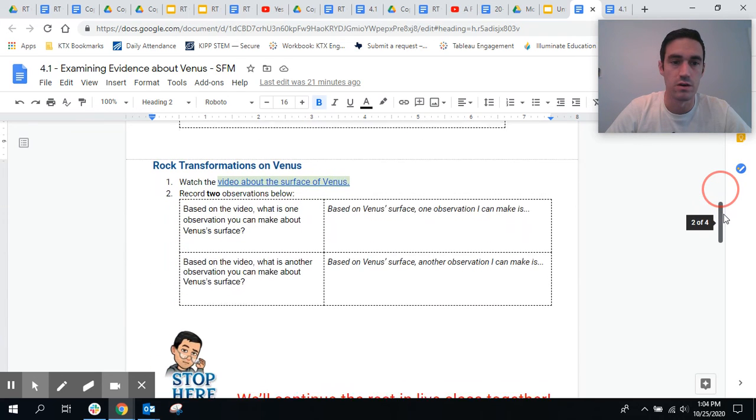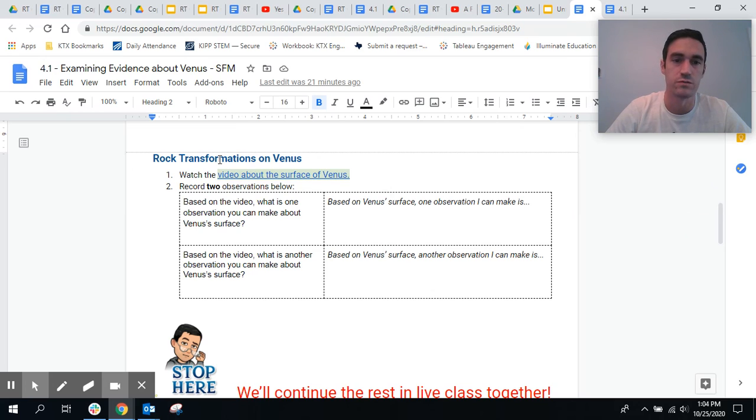And then you are going to continue on to this section here that says rock transformations on Venus. Click on this link and it will take you to a YouTube video. It's about two minutes where it will give you some facts about Venus and kind of do a simulated fly-by or flyover of the surface of Venus. And as you do that, I want you to look for two observations about the surface of Venus that you can make. And when you're done with your video, you can come back and put one observation in the top box and one observation in the bottom box.